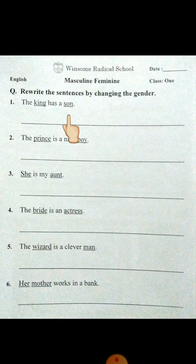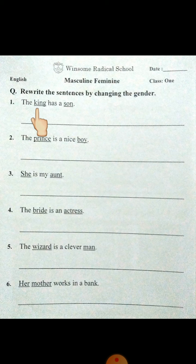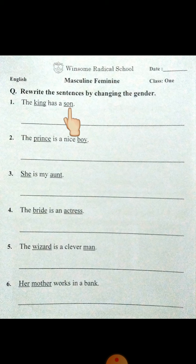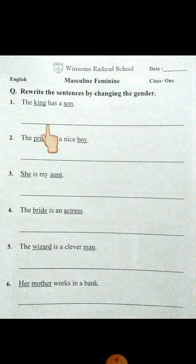Here are some sentences. You have to rewrite these sentences by changing the gender — the underlined masculine or feminine words must have their gender changed, and then rewrite the sentence. Number one: 'The king has a son.' King is masculine, and the feminine of king is queen. The feminine of son is daughter. So you have to write: 'The queen has a daughter.'